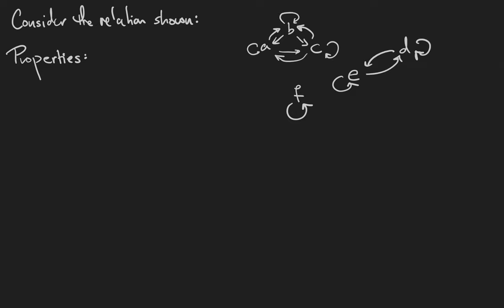What properties does this relation have? This relation is reflexive because we can see that every vertex in the directed graph has a loop, therefore every element of the set is related to itself.